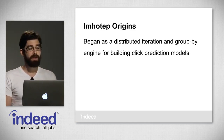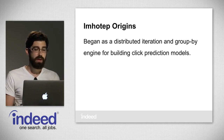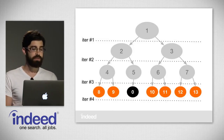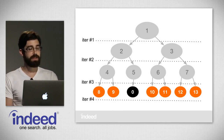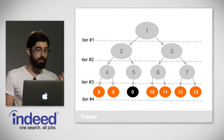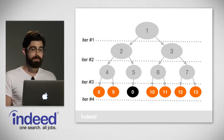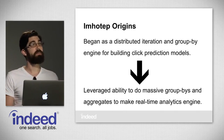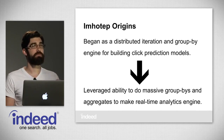The origins of Imhotep: it began as a distributed iteration and group-by engine for building our click prediction models. We built our click prediction models through a decision tree method, iterating over each of the nodes level by level, building it breadth first. We found that this was really useful for building decision trees, but we also realized we could leverage this ability to do massive group-bys and aggregates to make a very powerful real-time analytics engine. In addition to simple queries, it can also answer much more complicated queries.